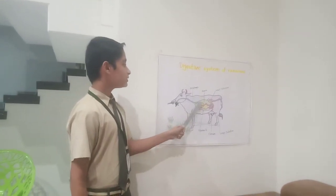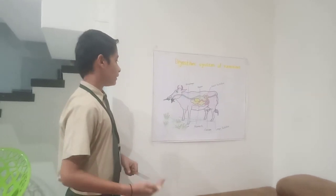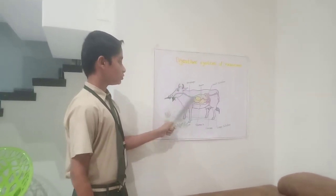Second is rumen. The first stomach of the ruminant is rumen. It receives food from esophagus.